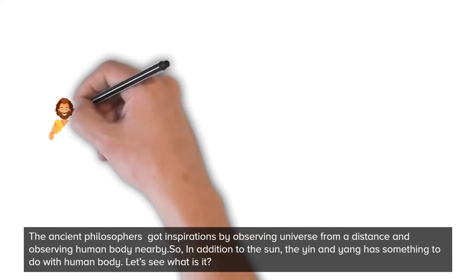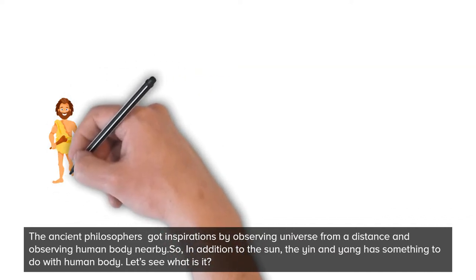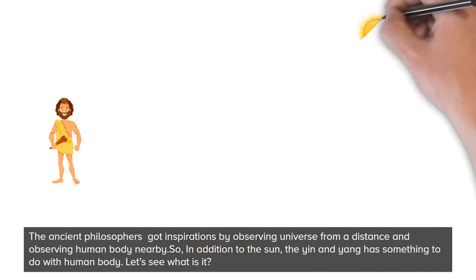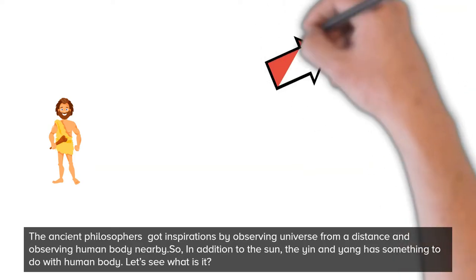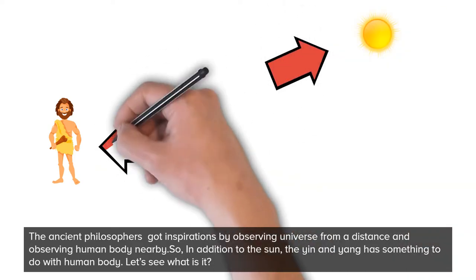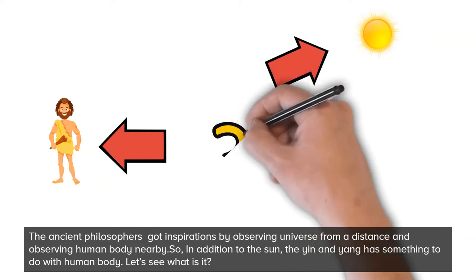The ancient philosophers got inspiration by observing the universe from a distance and observing the human body nearby. In addition to the sun, yin and yang also has something to do with the human body.